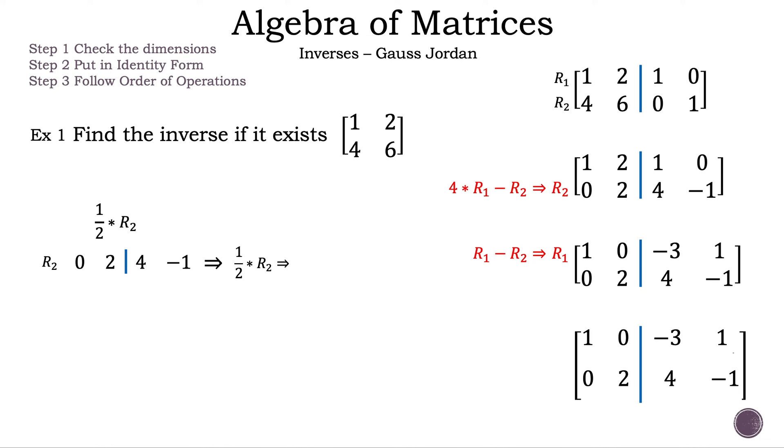Now let's multiply row 2 by half, and our result is 0, 1, 2, and negative 1 half. This is our new row 2. Now let's show our work by changing row 2 in our augmented matrix.